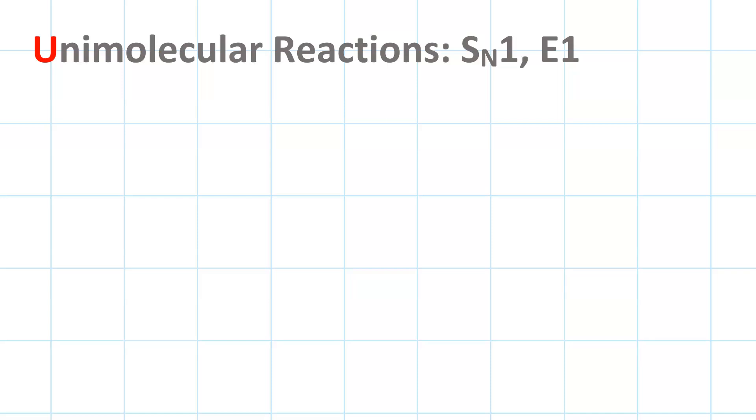Unimolecular reactions are sequential reactions. In the first step, you're going to have loss of a leaving group.